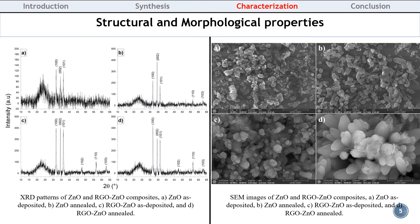The XRD results revealed that the prepared samples are fully crystalline in nature and possess the hexagonal wurtzite structure of ZNO. The zinc oxide phase could be obtained without any annealing treatment, as shown in this figure, and the annealing treatment of ZNO resulted in an improvement in crystallinity. The SEM image of ZNO showed an inhomogeneous distribution of nanocrystallites on the surface.